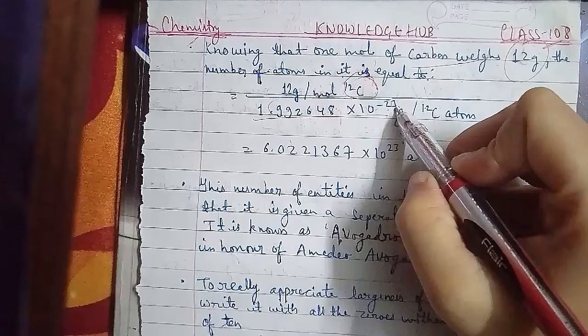This number of entities in one mole is so important that it is given a separate name and symbol. It is known as the Avogadro constant, denoted by Nₐ. It is named in honor of Amedeo Avogadro. The Avogadro constant is denoted by Nₐ.